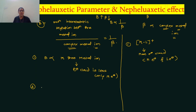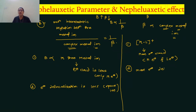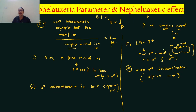Second point: in the free metal ion, electron delocalization is less, because the space is less, so less electron delocalization takes place. In the metal-ligand complex, there is more electron delocalization because there is more space available.